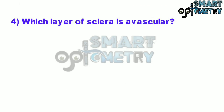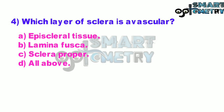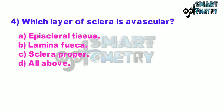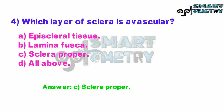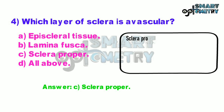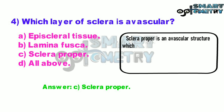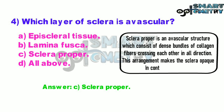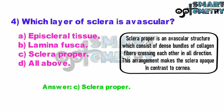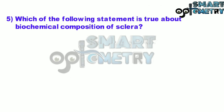Question number four: which layer of the sclera is avascular? A: episcleral tissue, B: lamina fusca, C: sclera proper, D: all of the above. Sclera proper is an avascular structure which consists of dense bundles of collagen fibers crossing each other in all directions. This arrangement makes the sclera opaque, in contrast to the cornea.